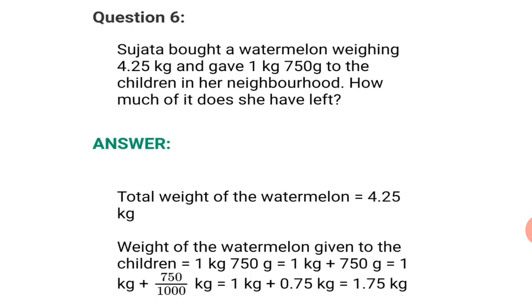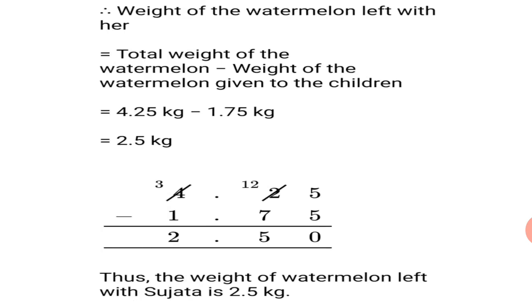Question number 6. Sujata bought a watermelon weighing 4.25 kg and gave 1 kg 750 grams to the children in her neighborhood. How much of it does she have left? Now, she bought a watermelon and she gave a part of it. So, what is left is we will come to know only when we subtract. Right? So, let's see the solution now. Total weight of the watermelon is equal to 4.25 kg. Weight of the watermelon given to the children is equal to convert it into kilograms in decimal. 1 kg 750 grams becomes 1.75 kg.